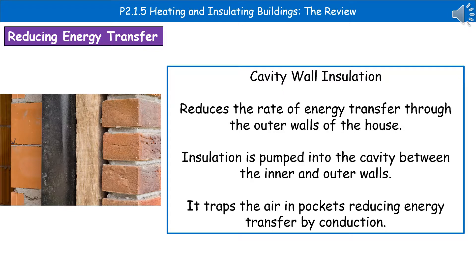The second kind of insulation is cavity wall insulation. A lot of modern houses have cavity walls — an inner wall and an outer wall with a gap between them. Normally that gap is filled with some kind of insulation to reduce the rate of energy transfer through the outer walls. The insulation between those two walls traps air in pockets and reduces energy transfer by conduction.